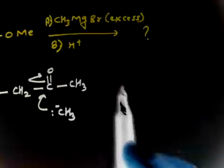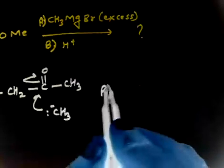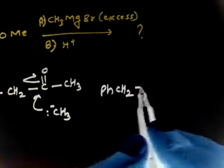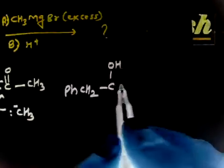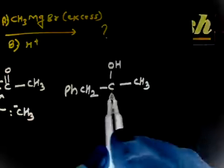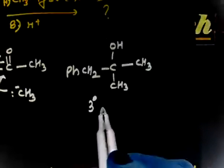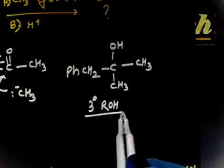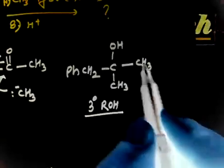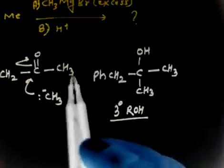After acidification you will have Ph-CH2-C(OH)(CH3)(CH3). You will get basically a tertiary alcohol, three degree alcohol. In this case you have two moles of CH3, one CH3 in the first step releases, then the next CH3.